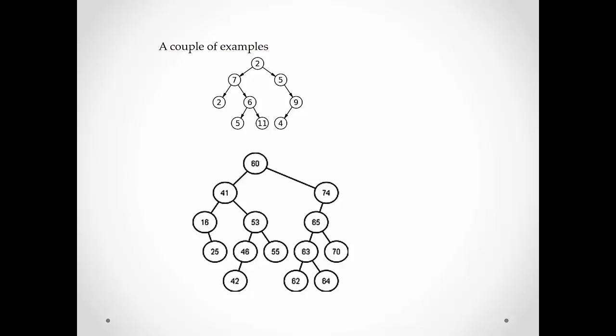Let's look at the larger tree in the second example. The root is labeled 60. It has a left child labeled 41 and a right child labeled 74. The left child labeled 41 in turn has a right child labeled 53. So we would say, like in the above example, that 53 is the root of the right subtree of 41, and 41 is the root of the left subtree of 60.